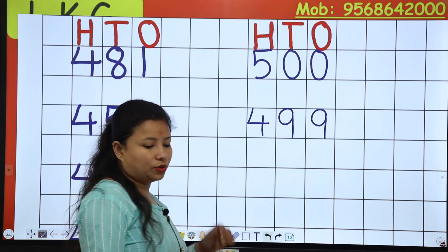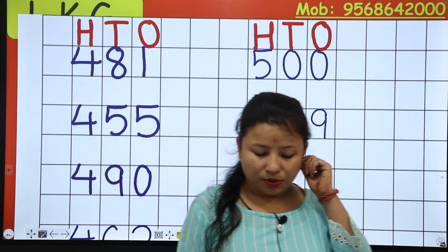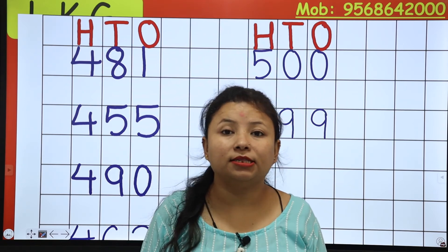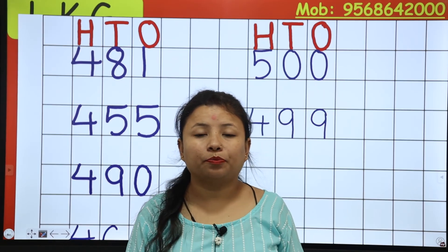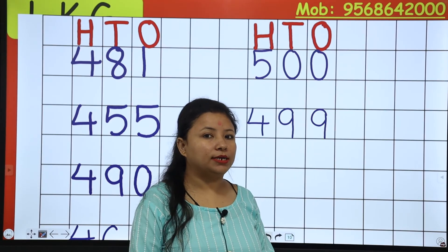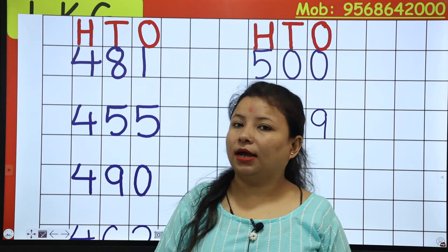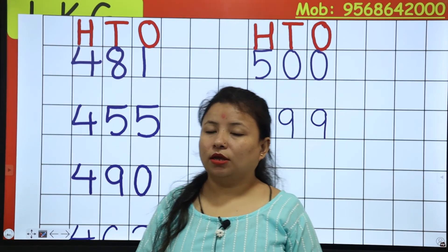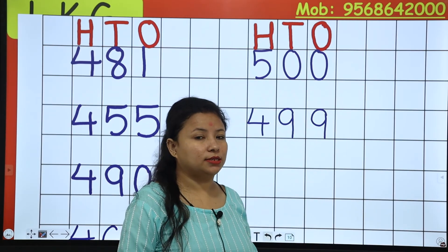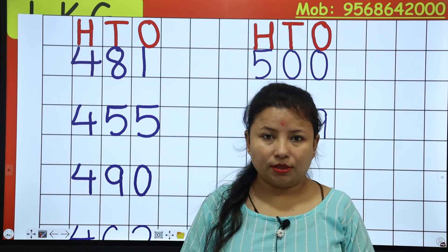Okay, so the next number is 496. 490 it means 9, and 6. 496. Done?